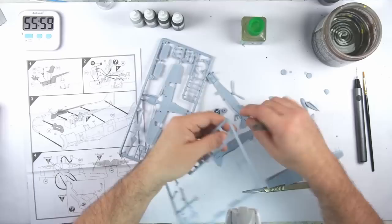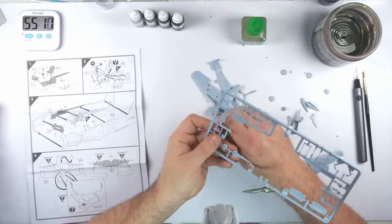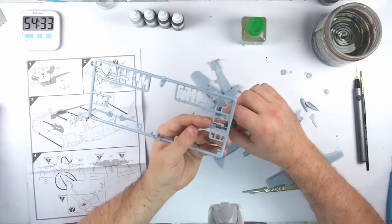The only parts I left on the sprues were the retracted undercarriage that I wasn't going to use, and the rear horizontal stabilizers which are indicated as mid-gray both sides, so I thought I'd paint them on the sprue and attach them afterwards.